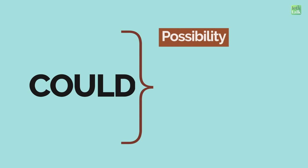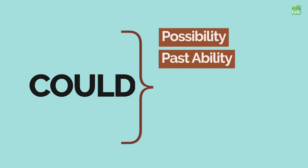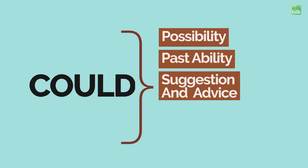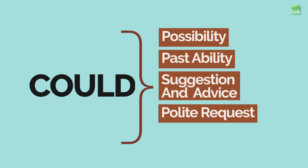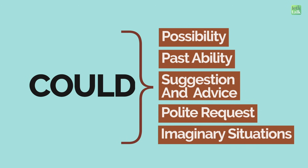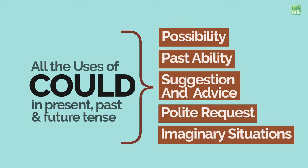So you can use could to talk about possibility, talk about a past ability, make a suggestion or give advice, for polite requests, and for imaginary situations in conditional sentences — five different ways. Now let's understand all five uses of could in present, past and future tense with positive and negative statements. I want you to make sentences along with me in the comments; it will help you understand this lesson better.